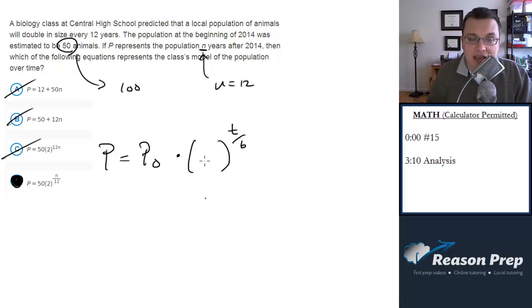Now this thing right here is 1 plus the rate of growth. That's often how you see it. In this case, since it's doubling every 12 years, it's basically 100% growth. So it's 1 plus 1.00, which is 2. You can also just see this as we're doubling every 12 years. So we're going to multiply the population that we have by 2 for every period of time.